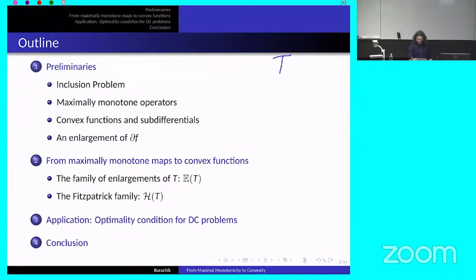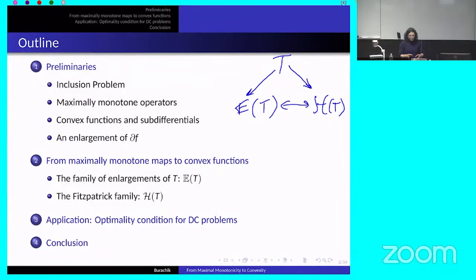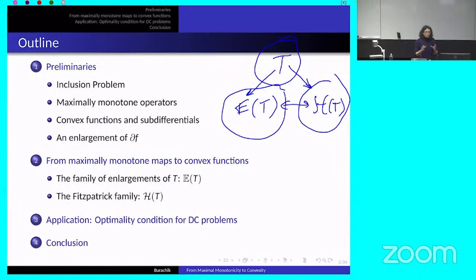If you have a maximally monotone operator T, you can construct a family of enlargements E(T), which is in a one-to-one bijective correspondence with a whole family of convex functions. There is a kind of trinity or triangle that allows you to go from maximally monotone operators to convex functions by means of a new object, constructed by adding a new dimension to the original problem.